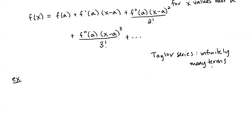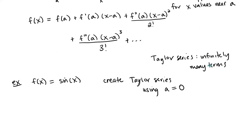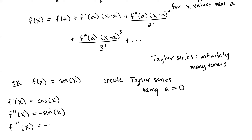Let's look at a quick example. Let's look at f of x being sine of x, and we're going to create a Taylor series using A equal to zero. So what we need to do is take some derivatives. We take the first derivative of f of x — the derivative of sine x is cosine of x. The second derivative is negative sine of x. The third derivative is negative cosine of x. And let's do a fourth derivative as well — we'd have positive sine of x. Now we need to evaluate these at A equal to zero.